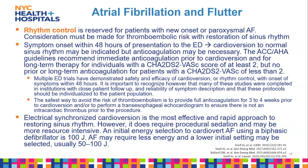With rhythm control, you must also assess thromboembolic risk. For symptom onset within 48 hours of presentation to the ED, cardioversion to normal sinus rhythm is ideal, but anticoagulation may be indicated. ACC/AHA guidelines recommend immediate anticoagulation prior to cardioversion for patients with a CHA₂DS₂-VASc score of at least two. If the score is less than two, long-term anticoagulation is not required.